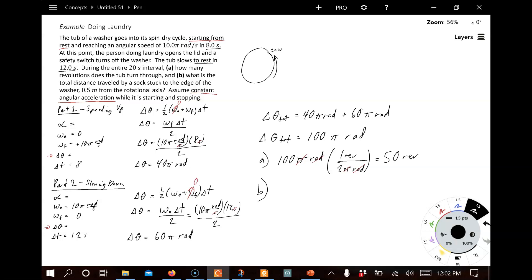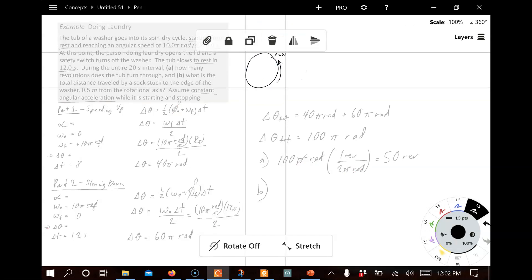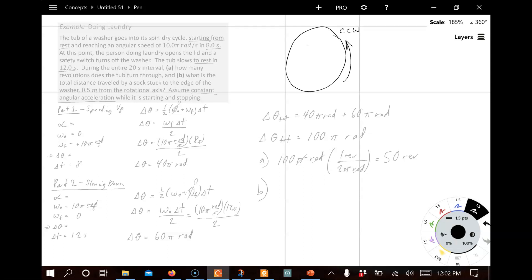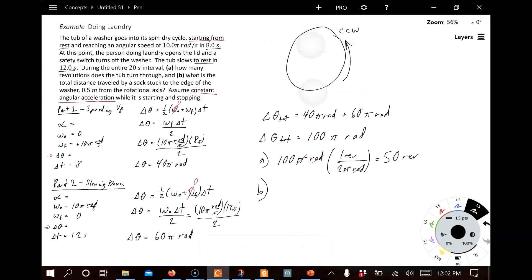Part B asks us, What is the total distance traveled by a sock stuck to the edge of the washer? So, in this case, what we're looking at here, we're going to go ahead and kind of look at this washer as it rotates. And it's going to go around, right, a certain 50 times, right? What's the total length around the perimeter if you go 50 times around? Well, we have to use the relationship, the tangential quantity, arc length, around the perimeter related to the angle through the radius R. In this case, the radius is given here, 0.5 meters.